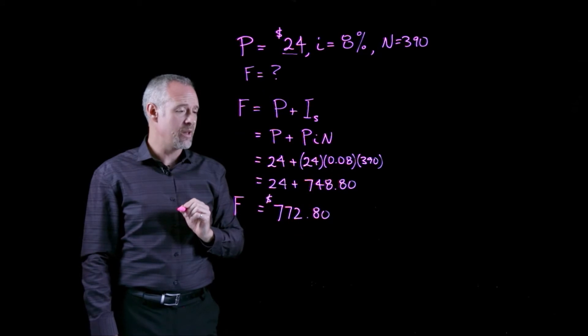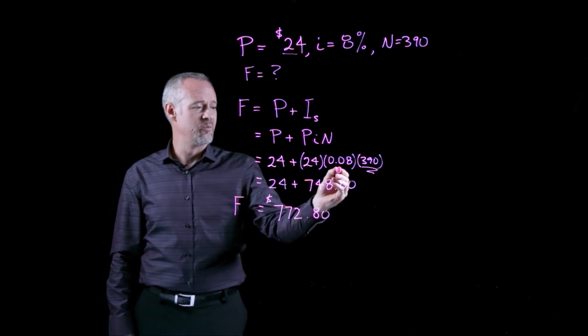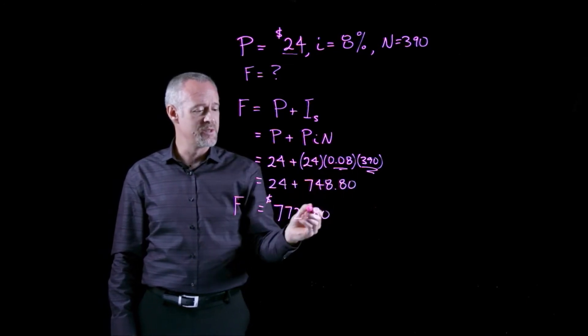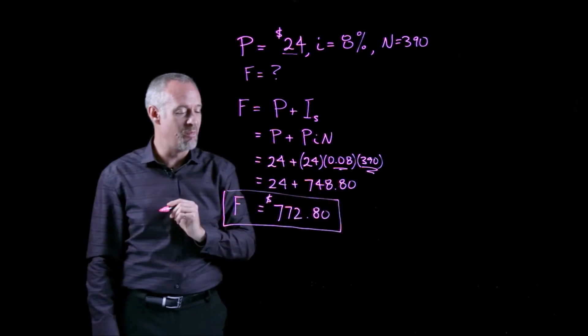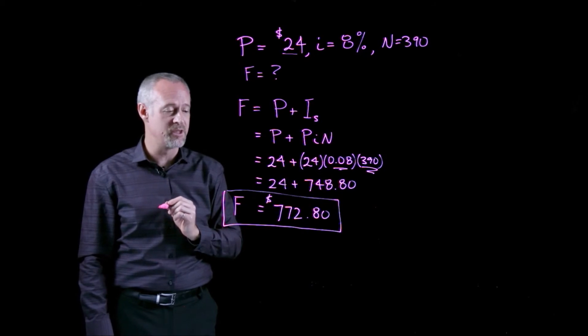So, for an investment horizon of 390 years, and by today's standards, a pretty good interest rate of 8%, we can see a rather unimpressive amount of our investment after 390 years of $772.80.